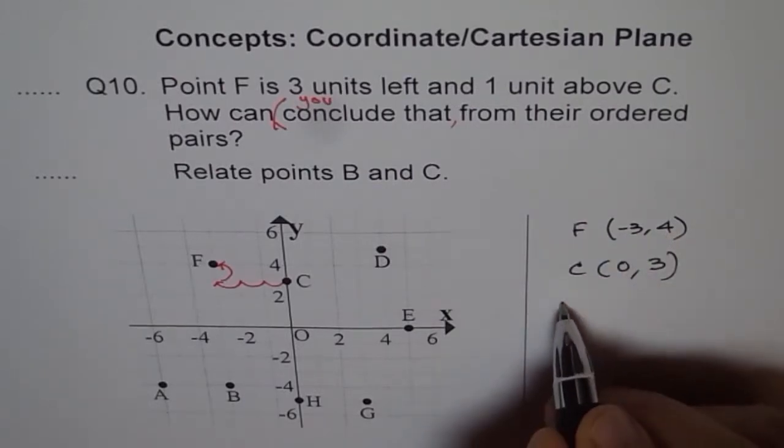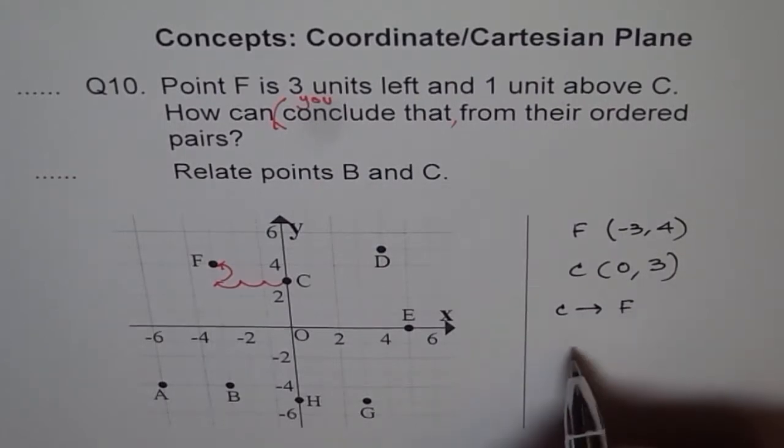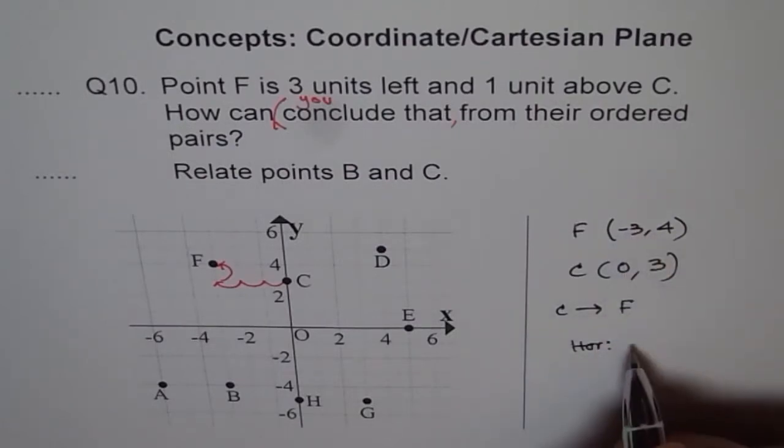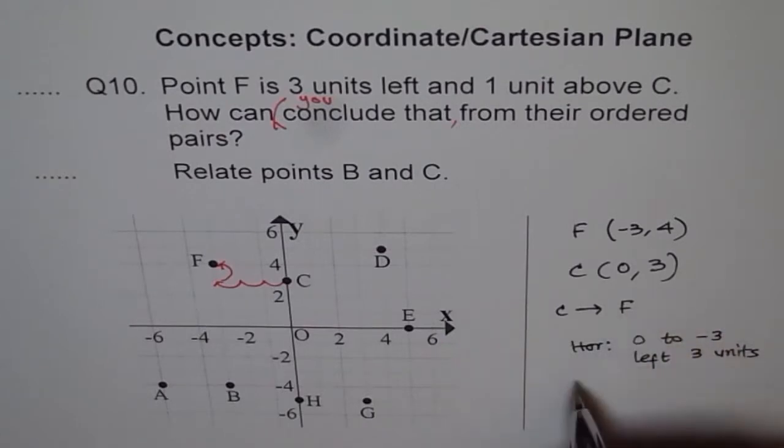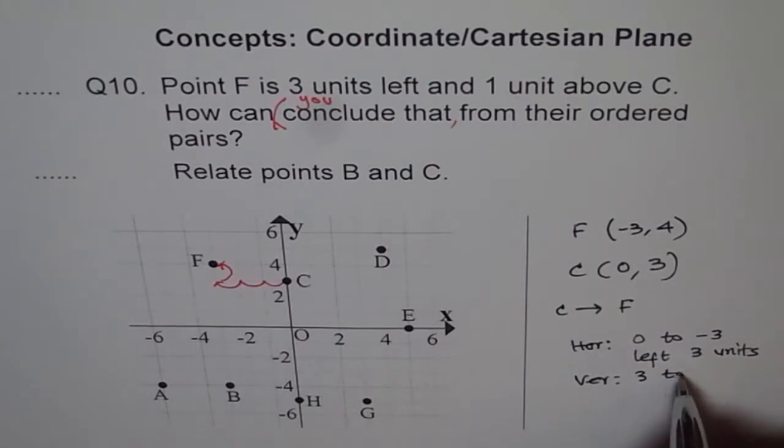So if you have to move from C to F, then how will you do? So horizontally you will go left 3 units. You will go from 0 to -3. That means left 3 units, correct? And vertically from 3 to 4. That means up 1 unit. Do you understand?